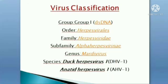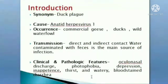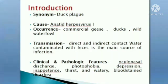Duck Viral Enteritis, also called duck plague, is caused by Anatid Herpesvirus 1. Commercial ducks and wild waterfowl are affected. Transmission is by direct and indirect contact; water contaminated with feces is the main source of infection. Clinical signs include ocular and nasal discharge, photophobia, depression, excessive thirst, and watery bloody diarrhea.